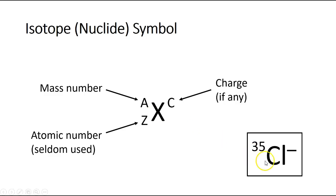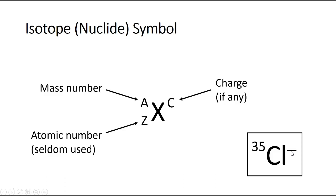Here's an example — this is chlorine. That's the element symbol X. I'm not including the Z here; it would be a 17, but you don't need to know that because you already know it's chlorine. The 35 tells me the mass of this particular chlorine atom. The negative sign here tells me it has a charge of negative 1. Remember, if the magnitude of the charge is 1, we don't write a 1 — a negative sign simply means negative 1, a positive sign means positive 1. If it's negative 2 or positive 3, then we start writing numbers in where the charge is. But if it's just negative 1 or positive 1, we just put in a minus sign or a plus sign.